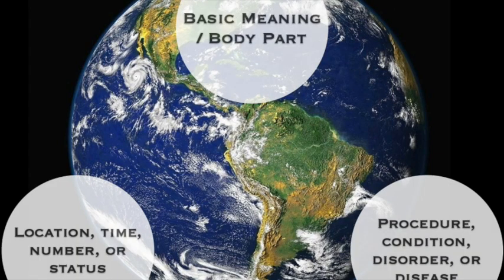You will generally find the same information in the same locations of medical terms. In the prefix, you'll usually find information such as location on your body, time, number — like one, two, or three — or the status of something like good or bad. The word root will contain either the basic meaning of what we're discussing or a specific body part or location. Finally, the suffix will contain either the procedure, the condition, the type of disorder, or the disease identifier so you understand what exactly you're talking about regarding that body part.